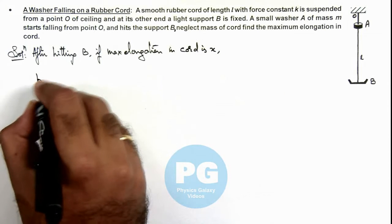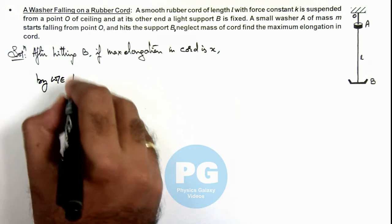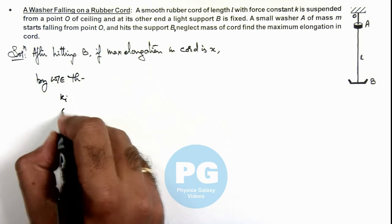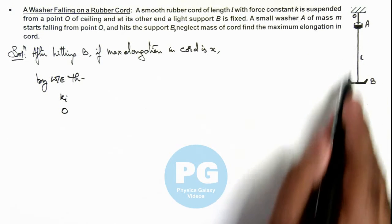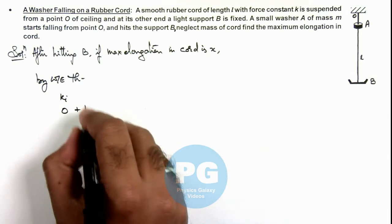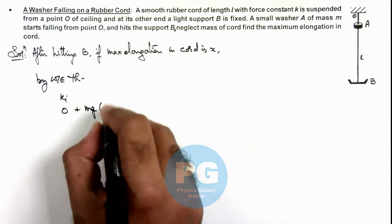By work energy theorem, here we can write: initial kinetic energy of the washer was zero, and it'll fall by a distance l plus x, so we can write work done by gravity is mg(l+x).